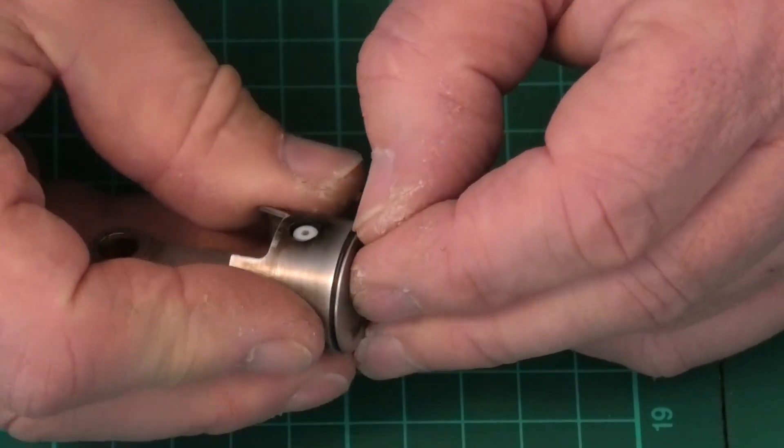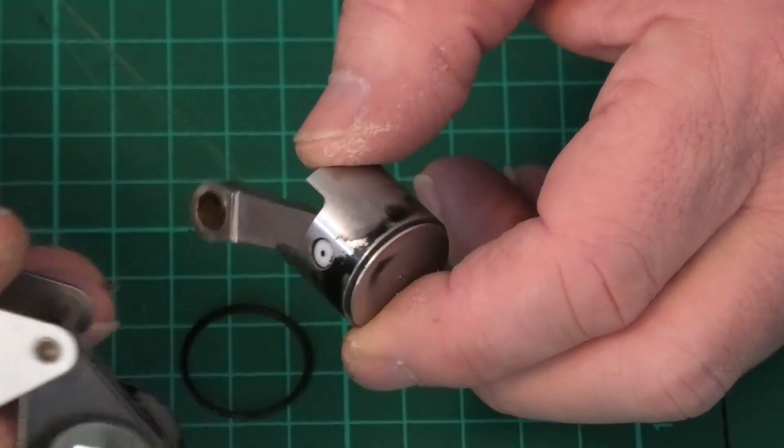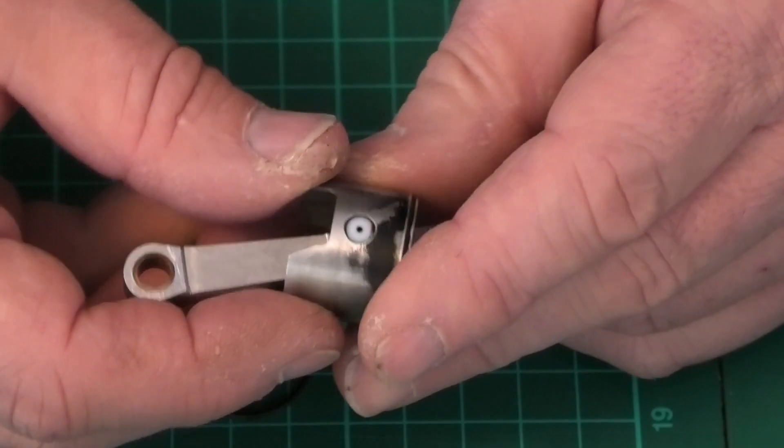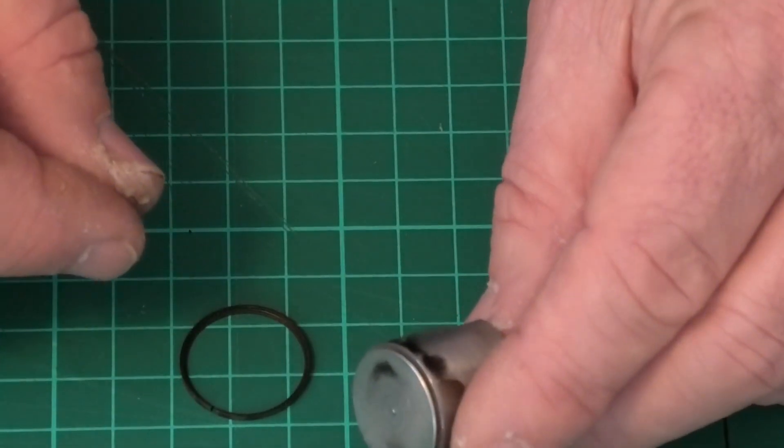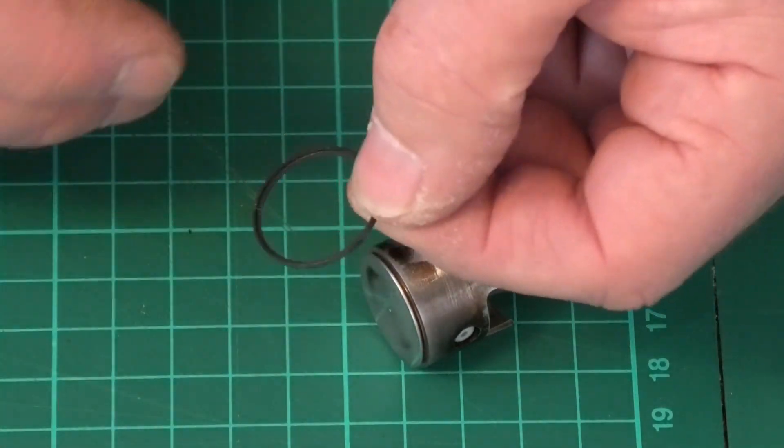I've just run my nail around. Fingernails are really good for cleaning out that groove because your nails are quite hard but they're not hard enough that they'll damage the actual piston itself. I had a look with my magnifying glass just to check there's nothing in there that could be causing a problem.